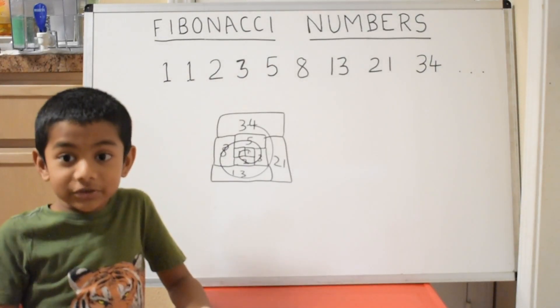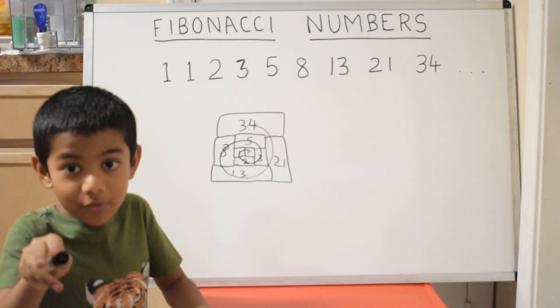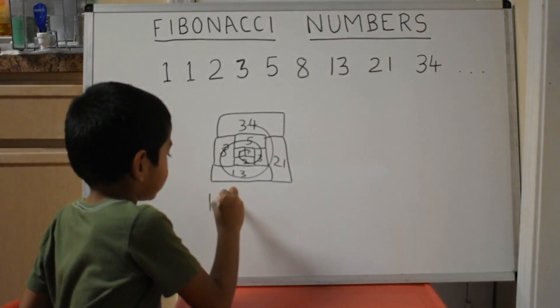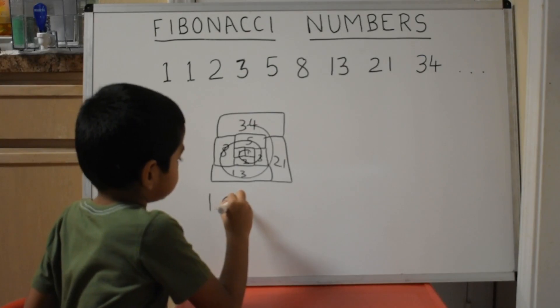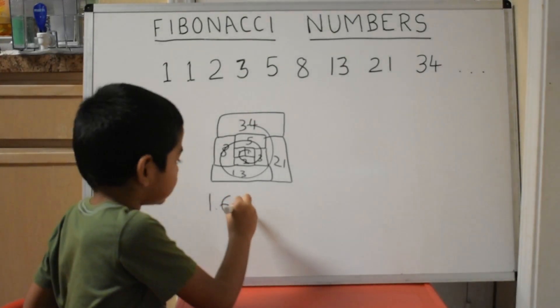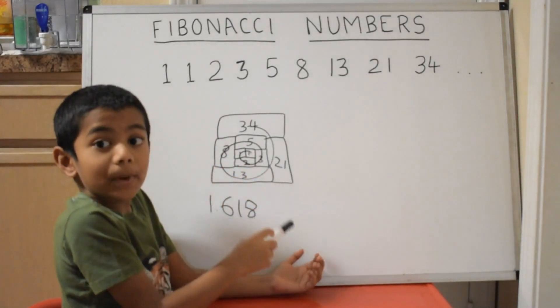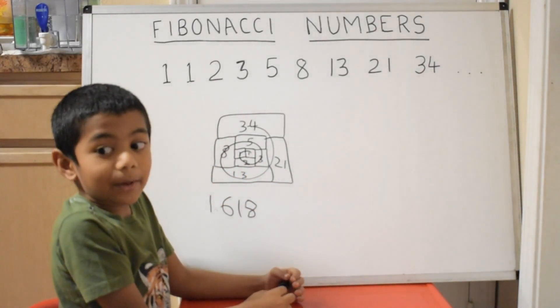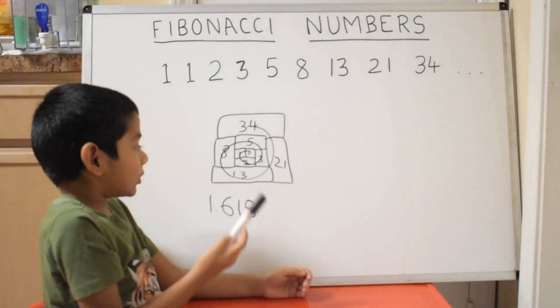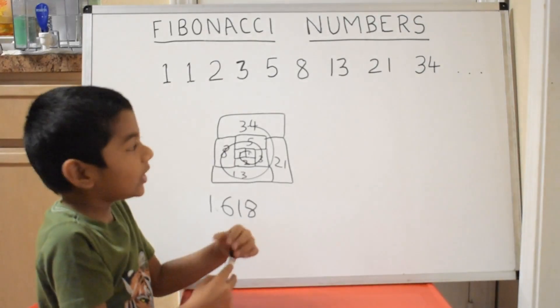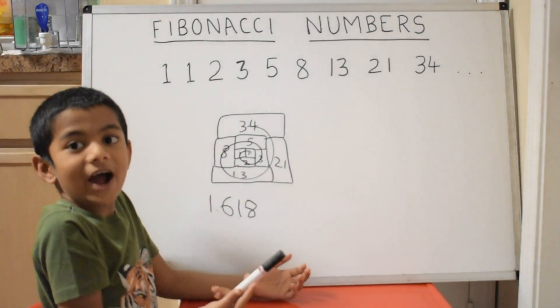Do you know the golden ratio? If you divide each number by its previous number in the sequence, you will get 1.618 approximately. This is also called phi.